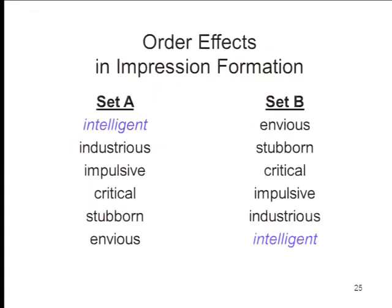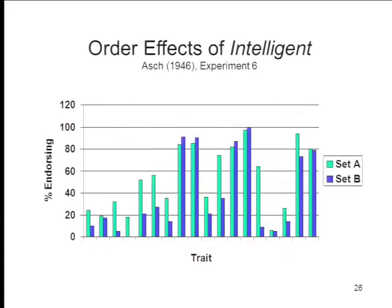Asch also discovered what are known as order effects in impression formation. Here's essentially the stimulus set from experiment one — the same words, except that intelligent is the first item subjects read in Set A and the last item in Set B. What you discover is that — it's not quite as clear visually, but statistically — whether intelligent appears as the first or last thing you learn about the person has a big effect on the impression.